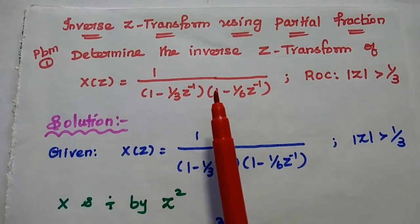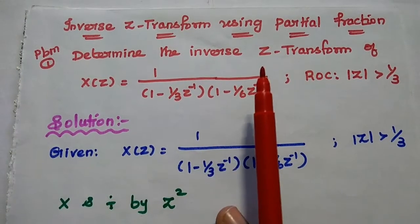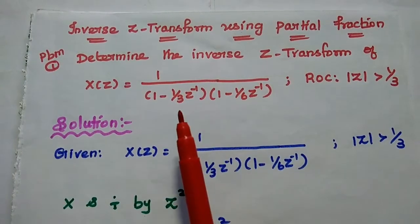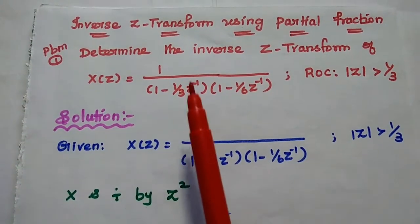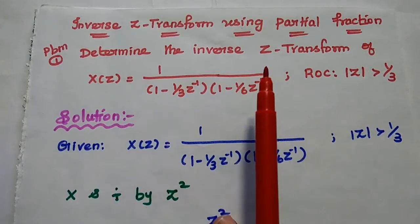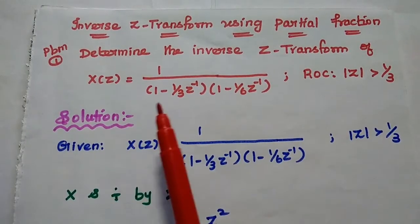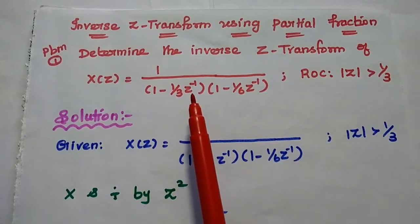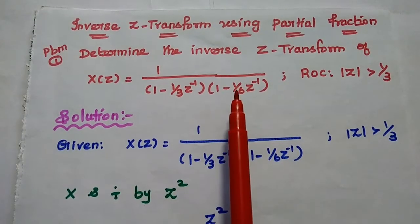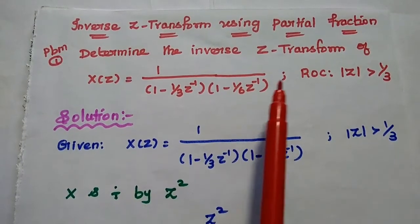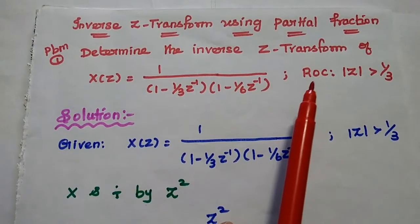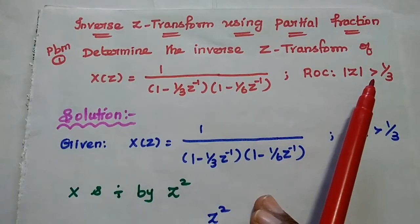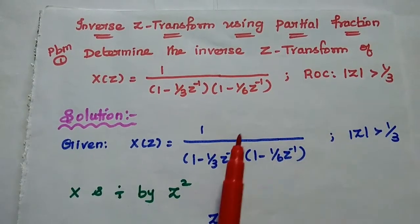Vanakkam. In this video lecture, we will find the inverse Z-transform using the partial fraction method. First problem: determine the inverse Z-transform of X(Z) = 1 / [(1 - (1/3)Z⁻¹)(1 - (1/6)Z⁻¹)], with ROC defined as the modulus of Z greater than 1/3.